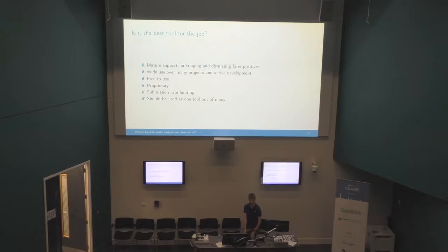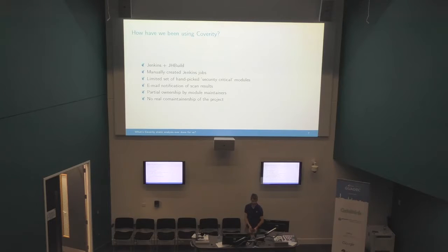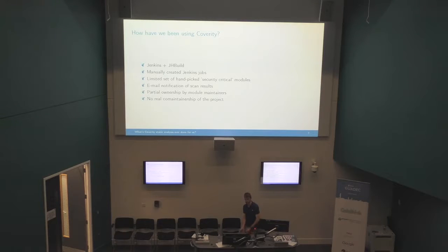Another prominent tool is Clang Analyzer, provided by LLVM, which also does a good job of analyzing C code. For the last year, we've been using Coverity with Jenkins on FreeDesktop, with one Jenkins job per module. Each module uses jhbuild to be built and to build all its dependencies from Git - so it's all the latest stuff - then it runs the analysis within Jenkins and submits the results automatically to the Coverity web service, which then emails the module maintainers and me with the results, and hopefully one of us goes and fixes whatever problems come up.